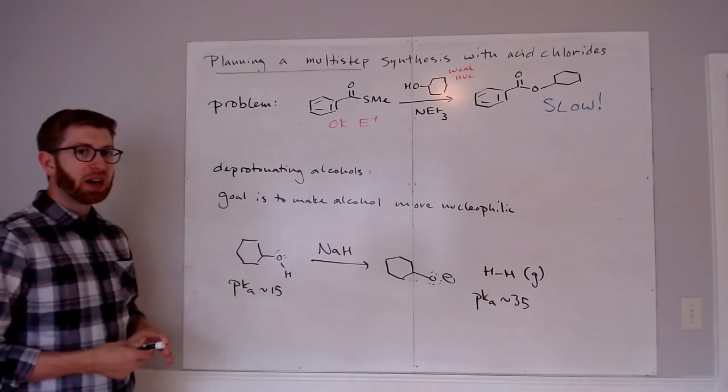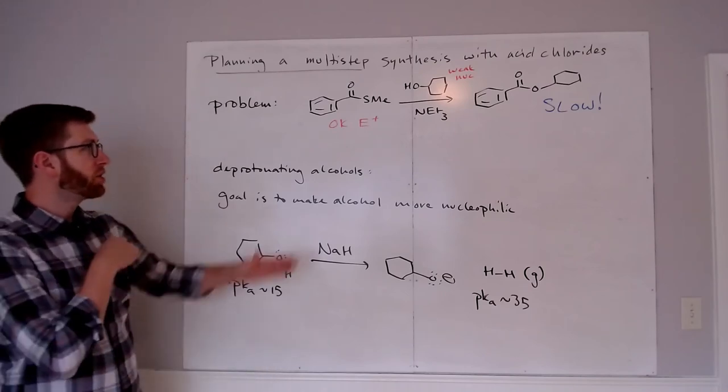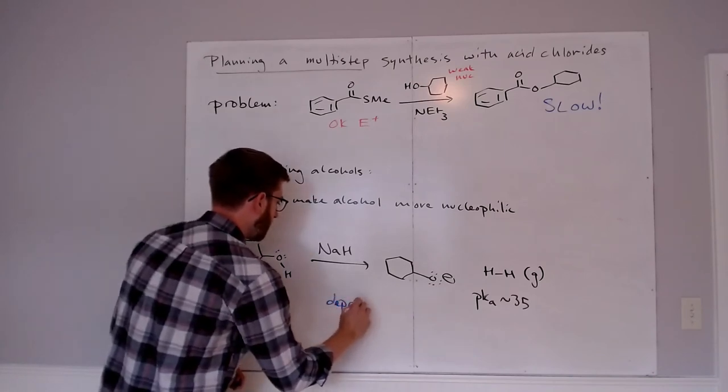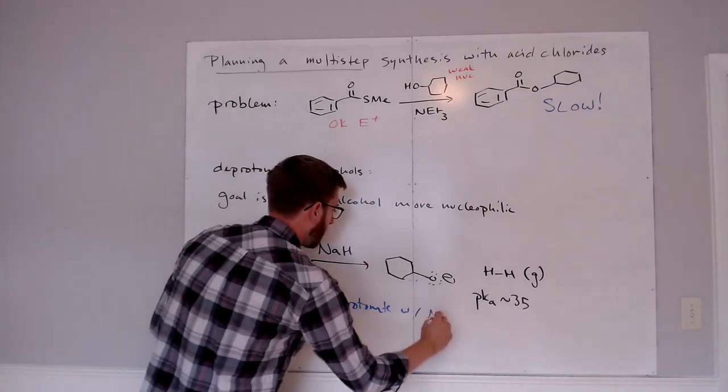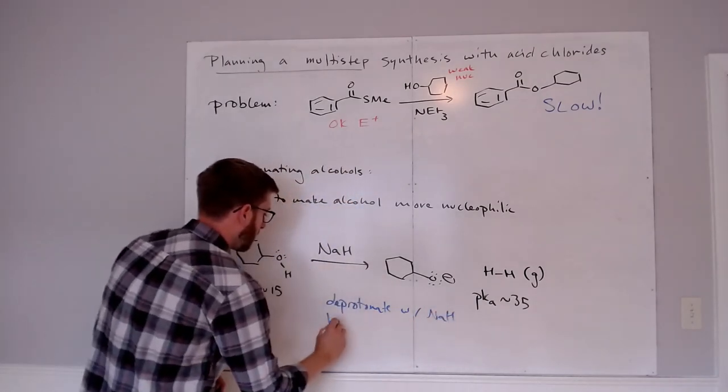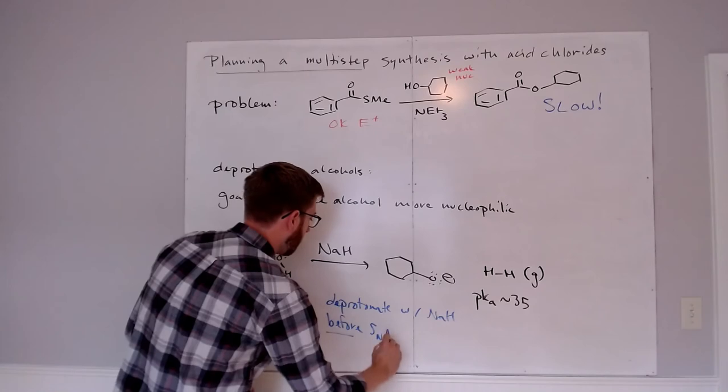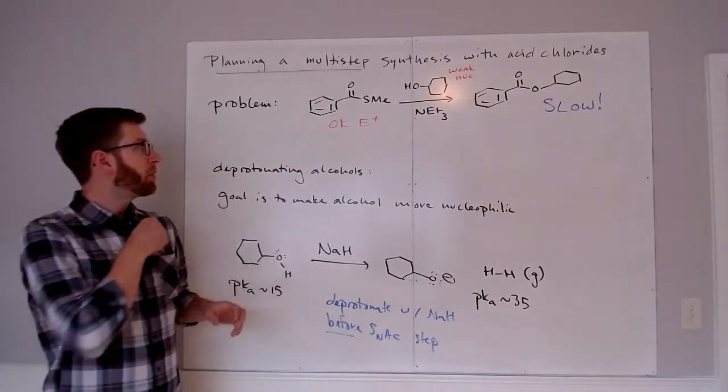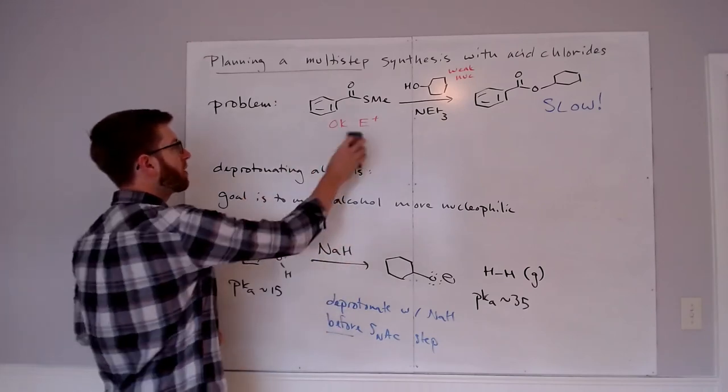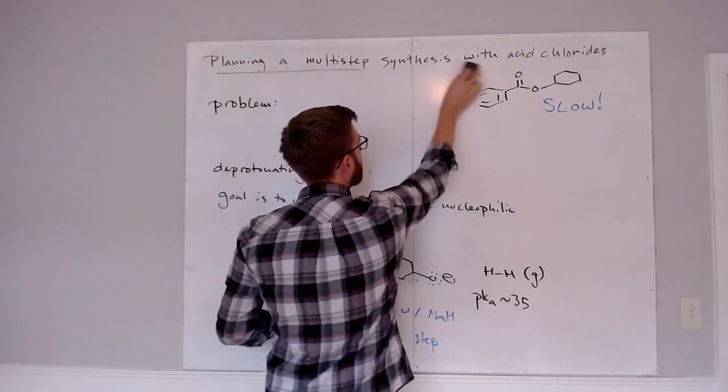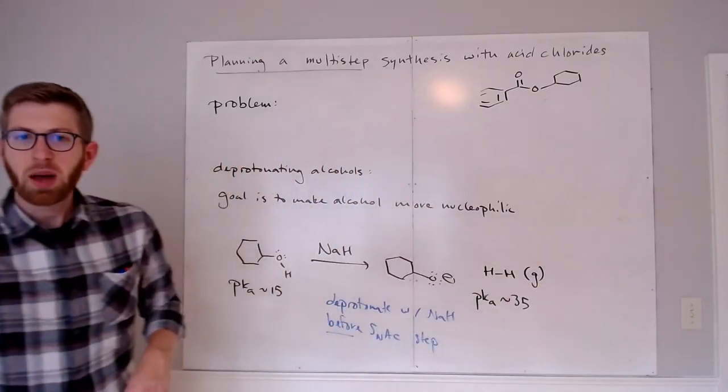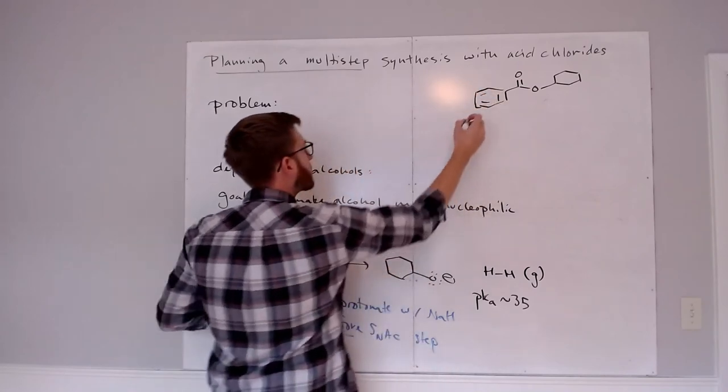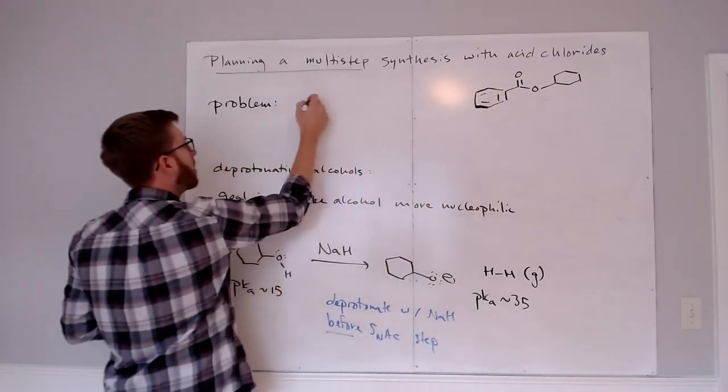This is a very common strategy for pre-forming a nucleophile. So we would use NaH as a step before actually doing the SNAC reaction. So we would deprotonate with NaH before SNAC step. What would that look like in a practical sense? Well, we would change our reaction scheme here a little bit. We know that this is the product we're trying to make, so that part will be the same, but we'll change the order of operations.